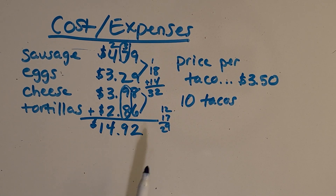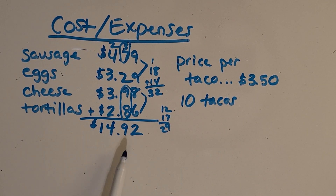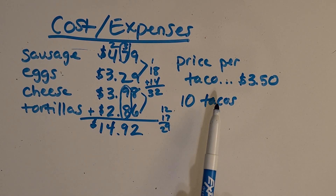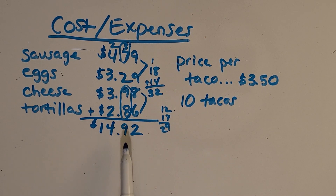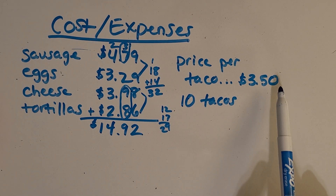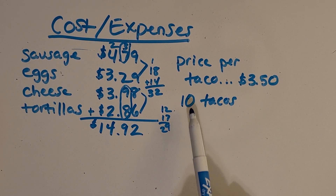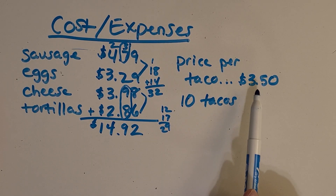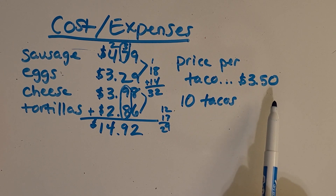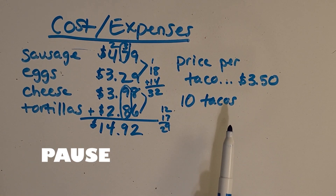That goes into my whole idea of how much profit I made, because my profit is the amount I made on the ten tacos minus all of my expenses. So now we have to think about how much money I made on the tacos. If I made ten tacos and sold them for three dollars and fifty cents each, can you pause the video and see how much I made on the tacos?